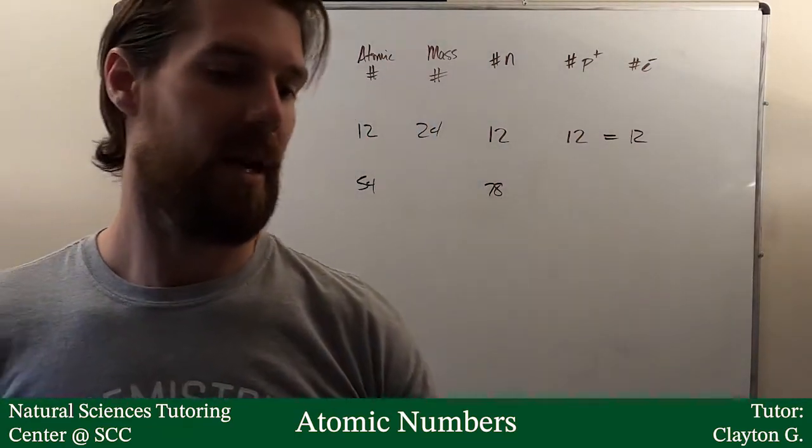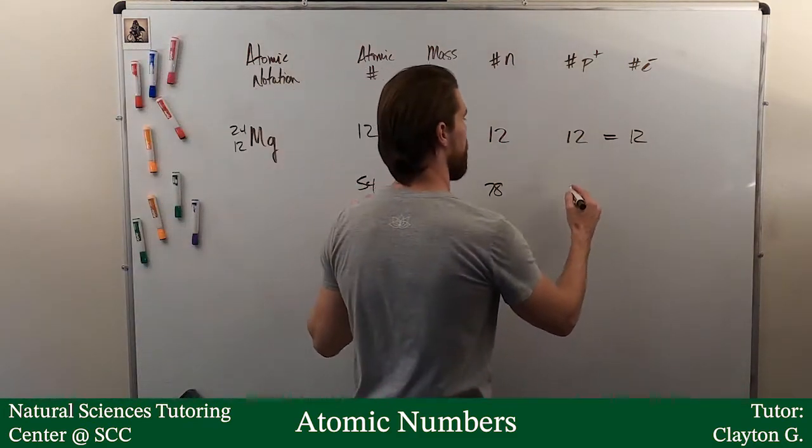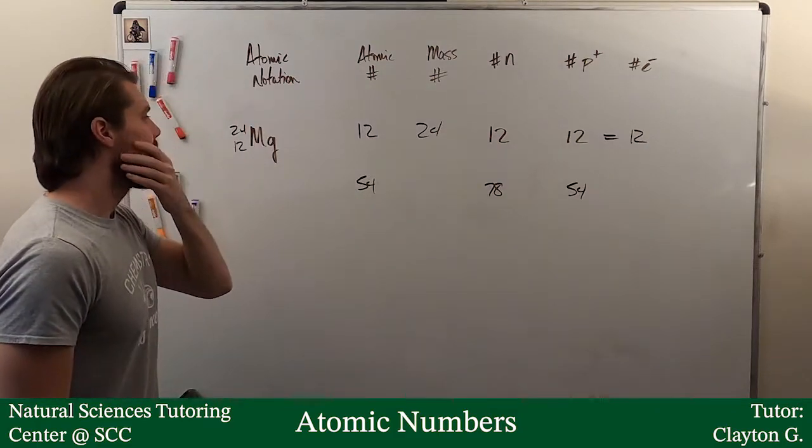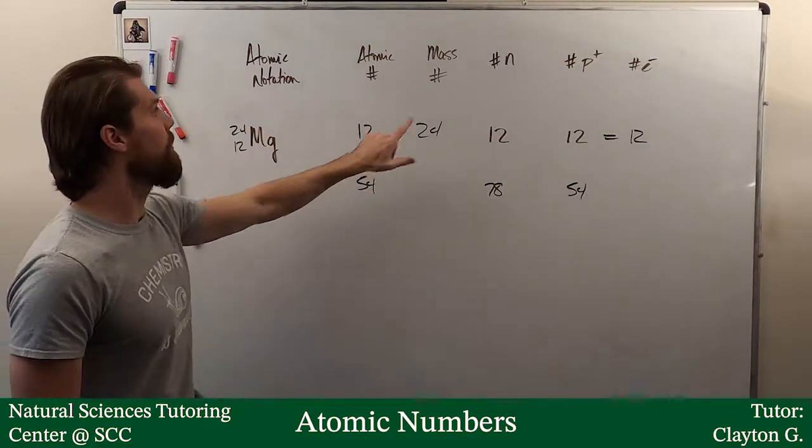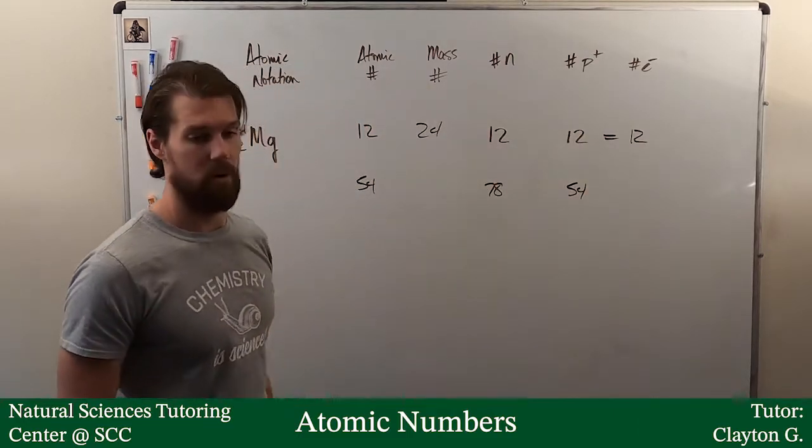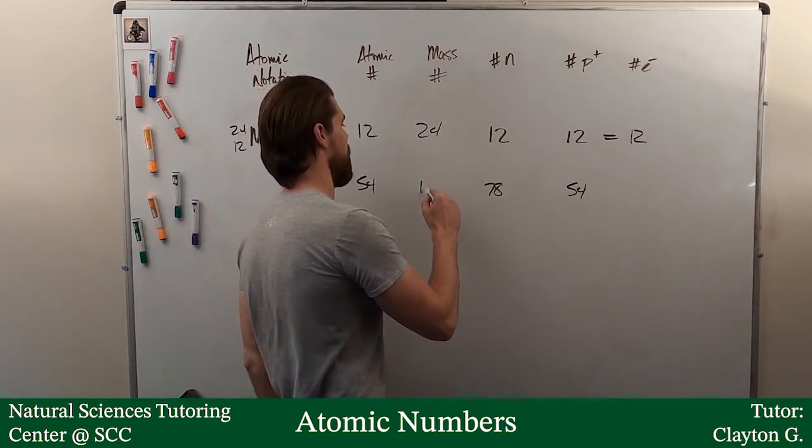All right. Well, once again, if I know the atomic number is 54, then I know the number of protons must be 54. Okay. Well, the mass number is the neutrons plus the protons, so whatever that equals, 132, I can add.